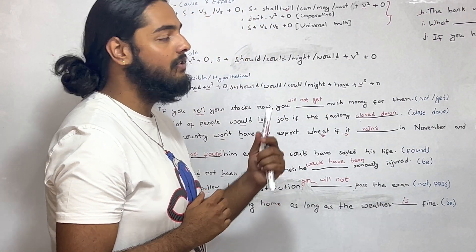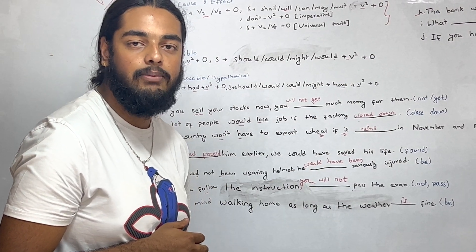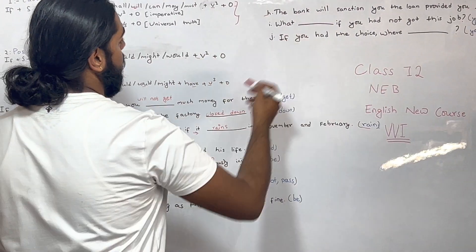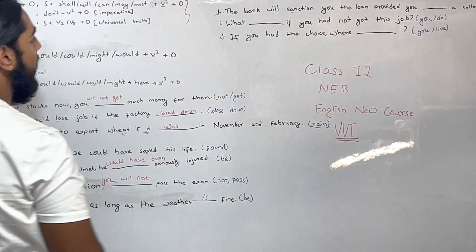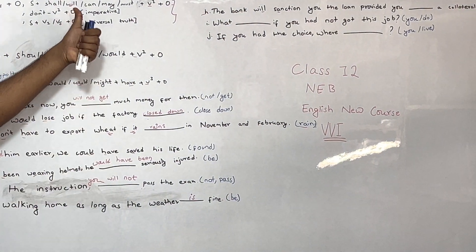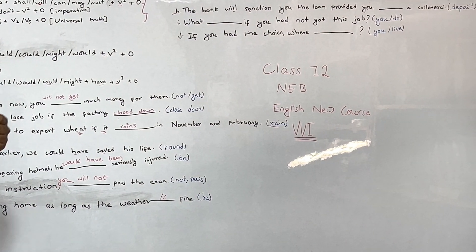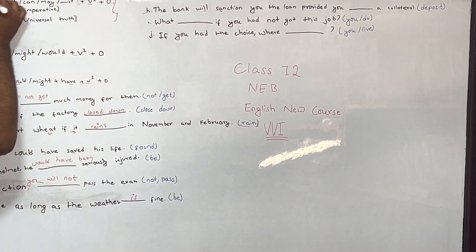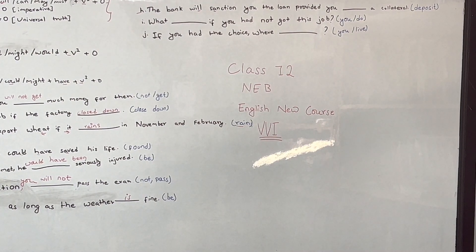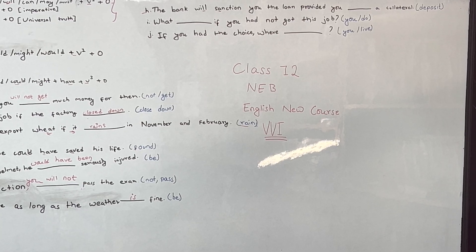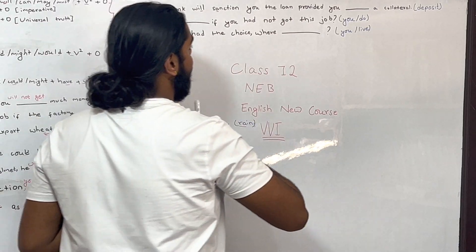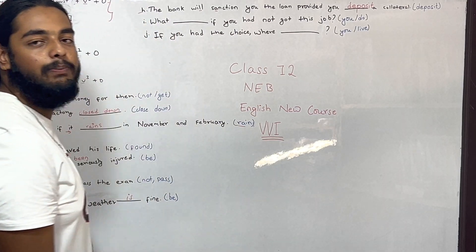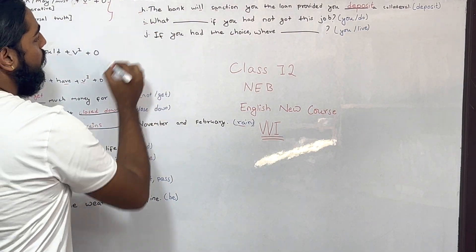Exercise H: The bank will sanction you the loan — will sanction — simple future. If-clause takes simple present. The bank will sanction you the loan provided you deposit the collateral.